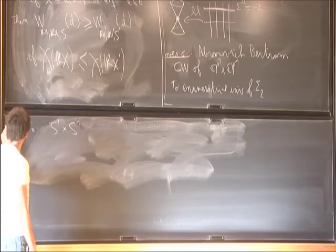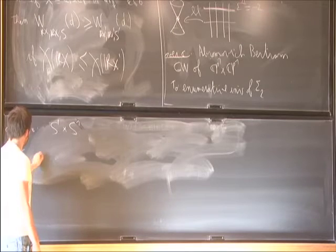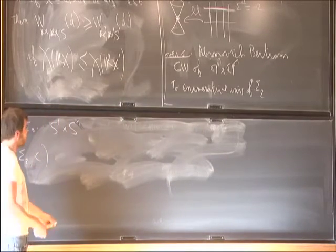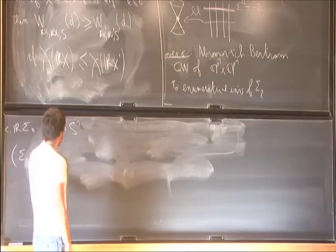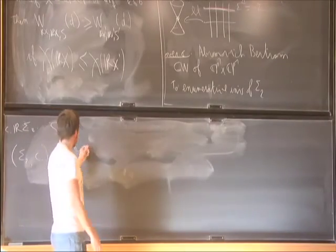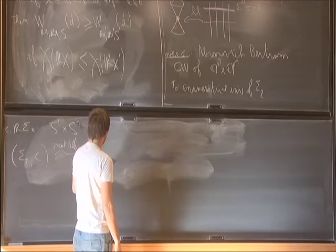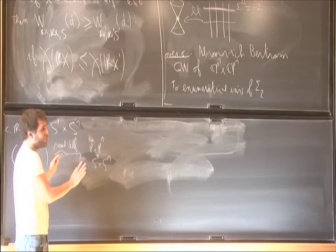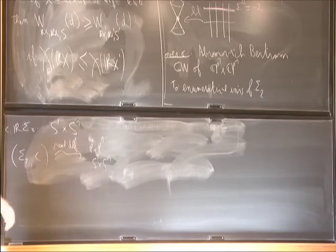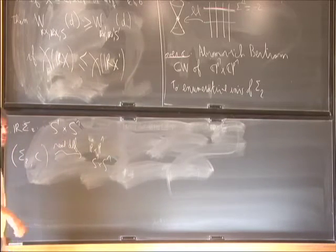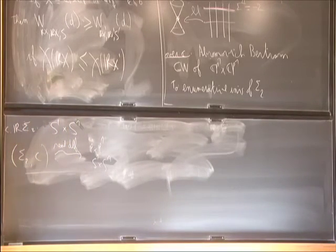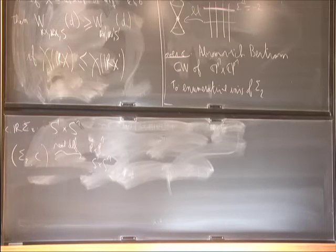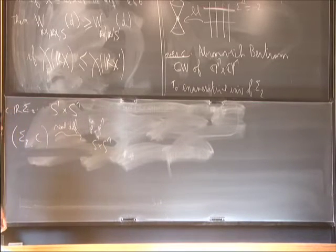So now you want to start from σ2 with this complex conjugation C, and you want to deform. You want to play the same game. But when you deform, the topology of the real part doesn't change. So if you are using real deformations, what you get is P1 cross P1 with S1 cross S1. At least to go in this direction, they already did all the work — you just look at the curves and the complex conjugation, and that's all. Several people noticed that this direction was easy and used it to compute some Welschinger invariants before.